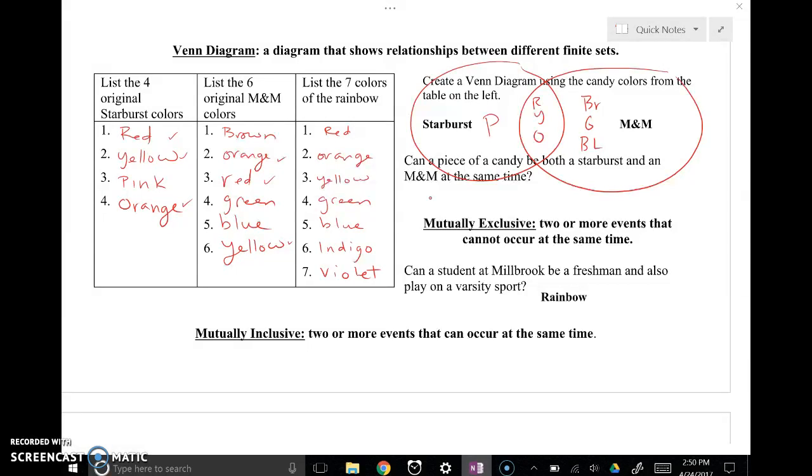Mutually exclusive events are two or more events that cannot occur at the same time. So, for instance, you can't be both an M&M and a Starburst at the same time. Those are two totally different types of candy.